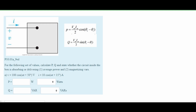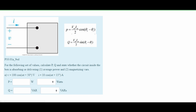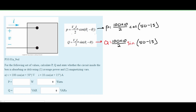For the last problem, it's asking the same thing. We can see that we have cosine for both voltage and current, so no need to convert — we can just plug these into the formula. From this we get approximately 410 watts for our power, which is being absorbed because it's positive. For Q, the magnetizing, we get approximately 287 VARs, which is also positive, so it is also being absorbed.